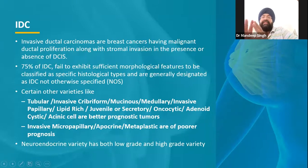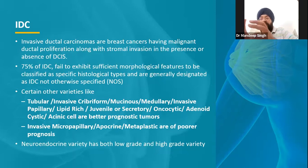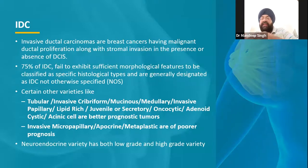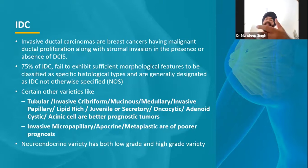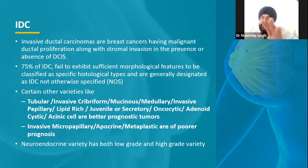Coming to ductal carcinoma: this is the most common biopsy report we get in the majority of cases when a breast lump is biopsied, and it is the most common form of breast cancer. In this, there is no particular morphological picture the pathologist sees under the microscope — it is a heterogeneous collection of bad-looking cells within the ducts that have breached the duct and are going into the stroma. We call this invasive ductal cancer NOS — not otherwise specified.